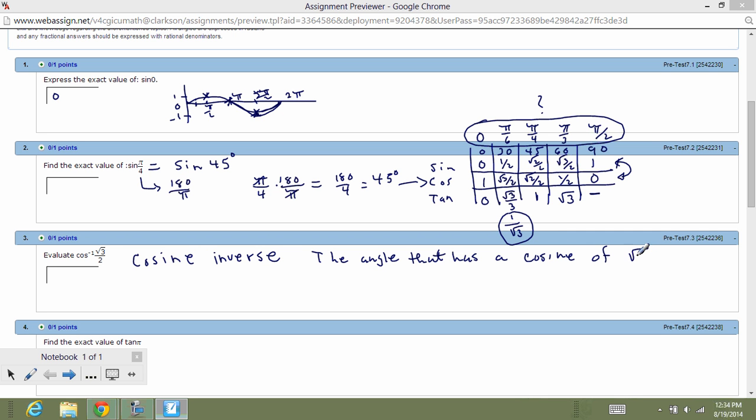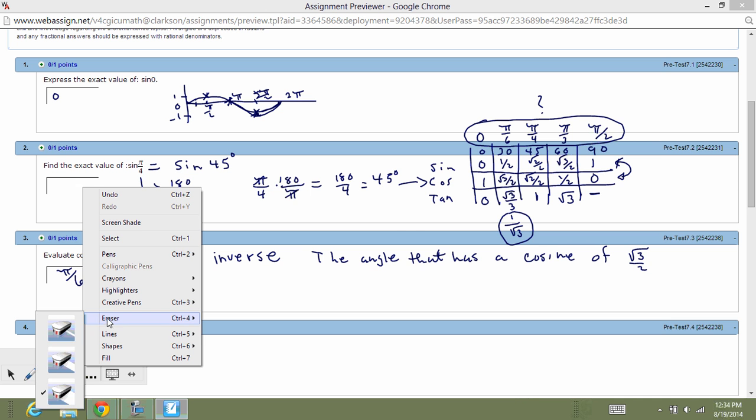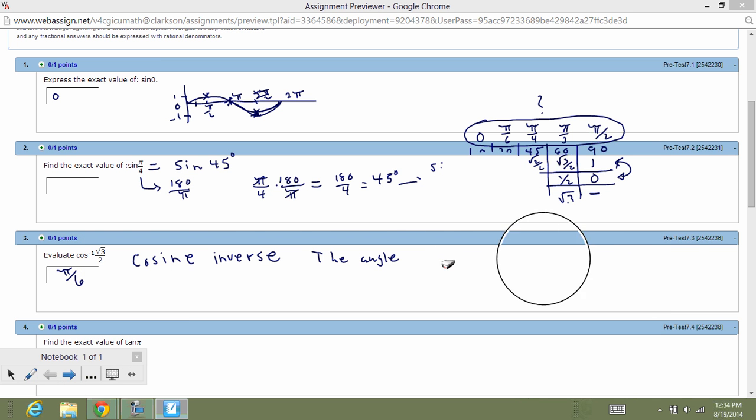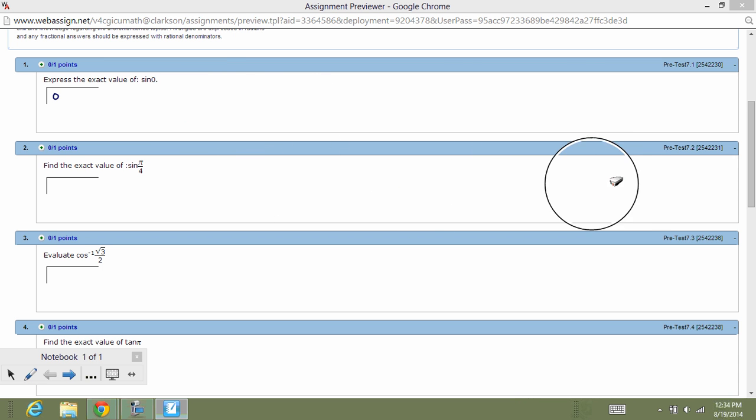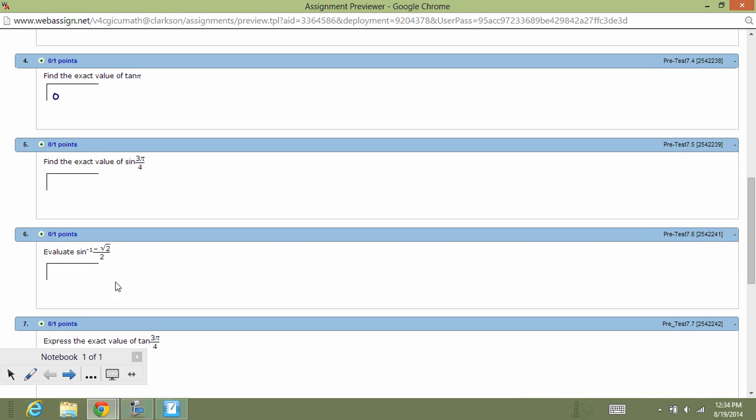The angle that has a cosine of square root of three over two. You look inside the chart. Find the value you're looking for in the particular trig ratio row that you're dealing with. And then find out what angle that corresponds to. And in this case, that angle is pi over six. If you entered 30, that would have been counted as wrong. Because we are looking for all the angles to be in a radian measure.